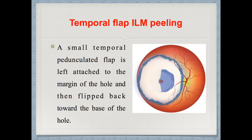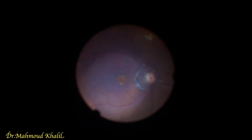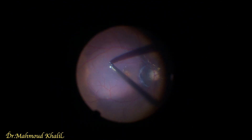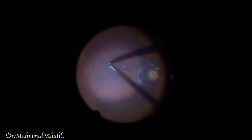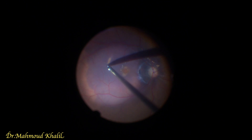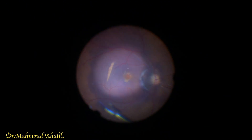The second technique is the temporal flap ILM peeling. In this technique, a small temporal pedunculated flap is left attached to the margin of the hole and then flapped back towards the base of the hole. We just peel the ILM at the temporal site and not all around. As seen in this video, this patient has a traumatic macular hole with choroidal rupture at the edge of the optic disc, starting to make a slice at the temporal part of the macula as the base for the temporal flap.